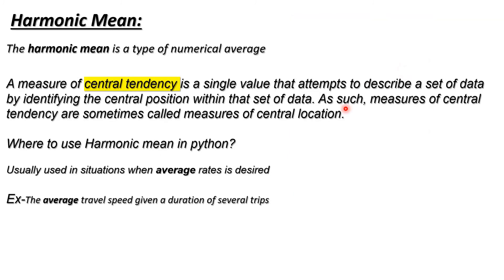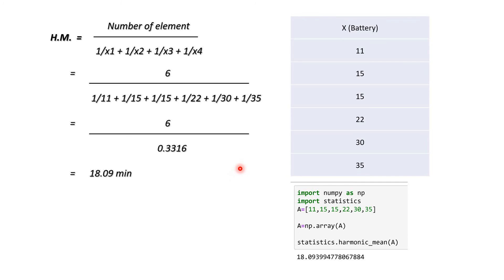When you need to calculate the average rate, you use the harmonic mean. The formula is: number of elements (6 in this case) divided by the sum of reciprocals: 1/11 + 1/15 + 1/15 + 1/22 + 1/30 + 1/35. Calculating this gives 18.09 minutes — this is the central tendency, the average rate of battery life in this data set.